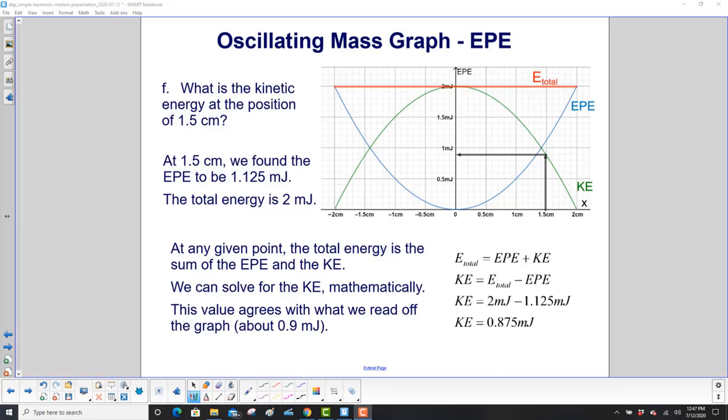What is the kinetic energy at the point 1.5 centimeters? Again, you can just read it off the graph. Here's 1.5 centimeters. You go up to the kinetic energy curve, go over here, and it looks like about 0.9 millijoules. Or, use this. We already found the EPE. Now, we know the kinetic energy is going to be the total energy minus the EPE. So we have 2 millijoules minus the 1.125 millijoules that we calculated, and the kinetic energy is 0.875 millijoules. And that's pretty close to the 0.9.